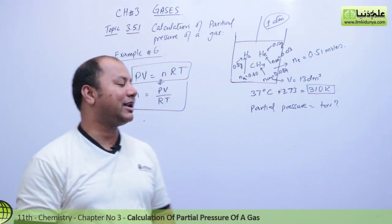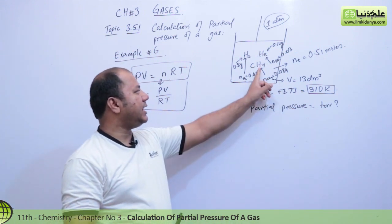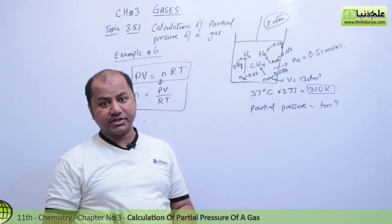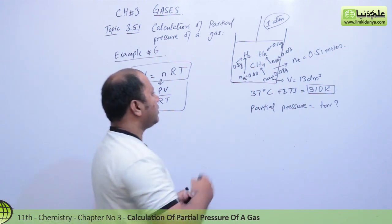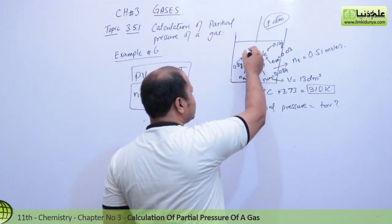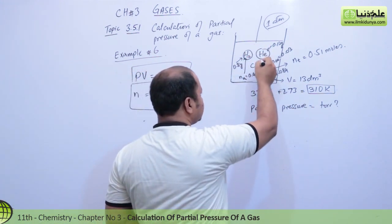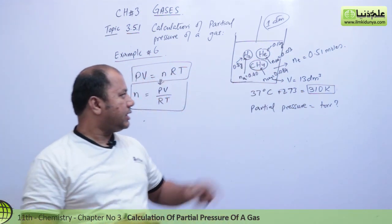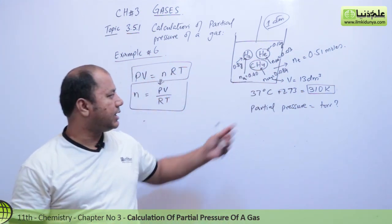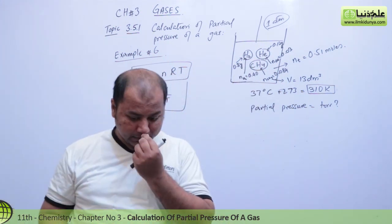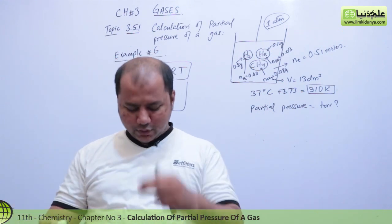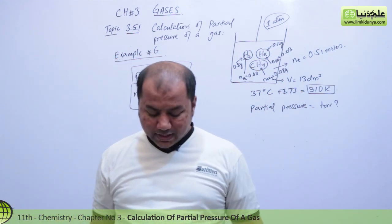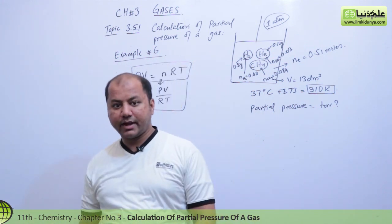What we are trying to do throughout this session is find the partial pressures of methane, helium, and hydrogen. To do that, we first need to calculate the mole fractions. As I told you in the last lecture, when you add all mole fractions together, the answer equals 1 (unity). Let's carry on with the mole fractions now.